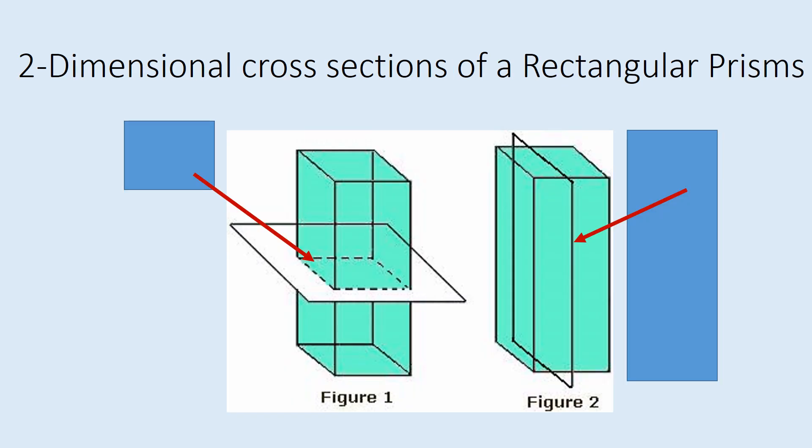Now the rectangular prism is probably the easiest one because what is the base of a rectangular prism? It's a rectangle and you'll see that in the drawing. On the left you get the side which again is a rectangle.